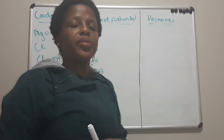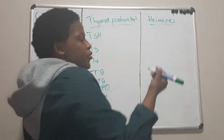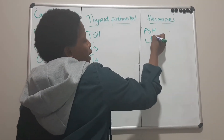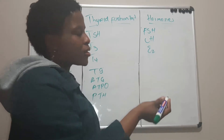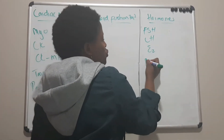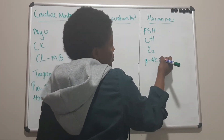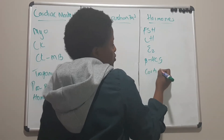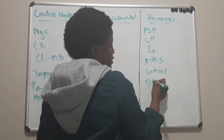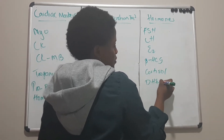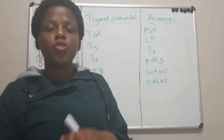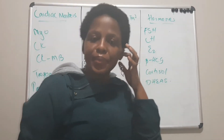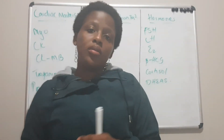Another group of tests done in the chemical pathology lab is hormones. The hormones that we will test for include FSH, LH, estrogen, beta-hCG, cortisol, and so on. Like I said, they will not be limited to the ones I write on the board.